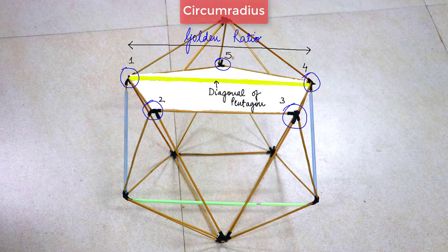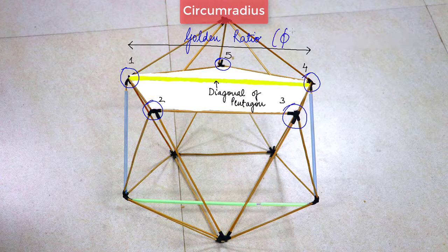To find out what exactly the golden ratio is, please click on the above link. This golden ratio is denoted by the Greek alphabet phi.